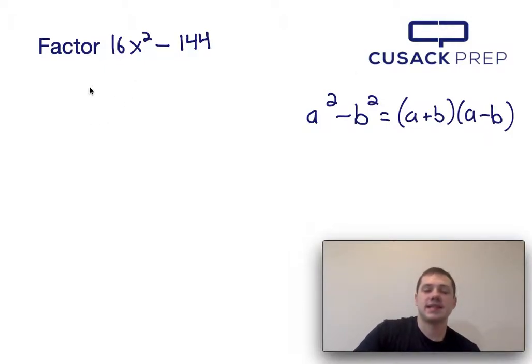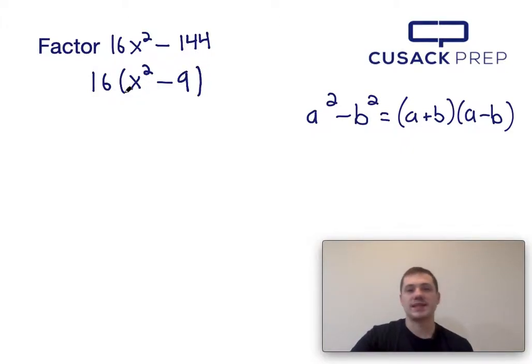Since 16x squared is divisible by 16, I can take a 16 out of both terms, and when I divide 16x squared by 16 and I divide 144 by 16, what I'm left with is 16 times x squared minus 9.